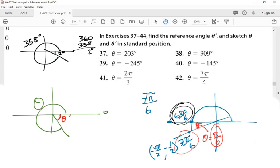Which, with a common denominator, is 6π over 6. 7π over 6 minus 6π over 6 equals π over 6. Your reference angle.